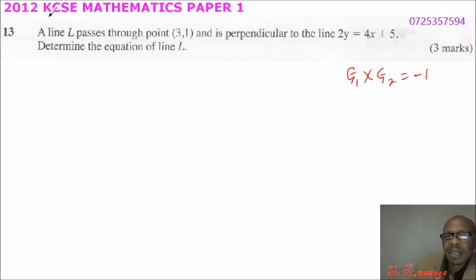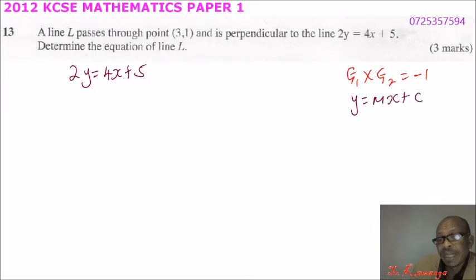So we can say 2y equals 4x plus 5. You have to write this equation in the form of y equals mx plus c, where m is the gradient, c is the y-intercept. So we can divide throughout by 2.